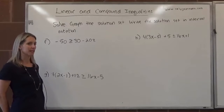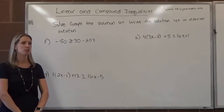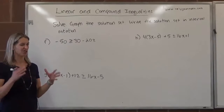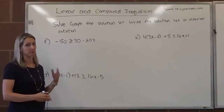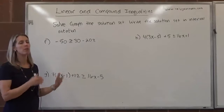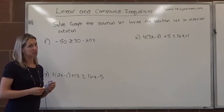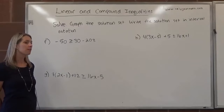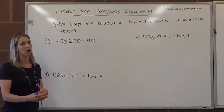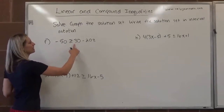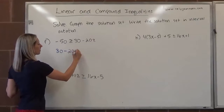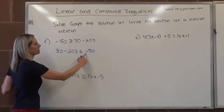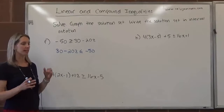We're going to continue solving linear inequalities. We have negative 50 is greater than or equal to 30 minus 20z. We see the variable on the right-hand side, which is generally a problem. Students feel more comfortable with the variable on the left-hand side. Inequalities are not commutative the way equations are — x equals 4 is the same as 4 equals x, but that's not true with inequalities. So if you want to get the variable on the left-hand side, you have to switch the inequality symbol too. Rewriting: 30 minus 20z is less than or equal to negative 50 — still opening toward the negative 50.